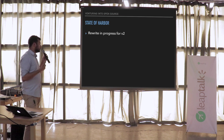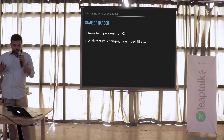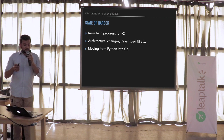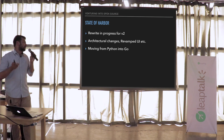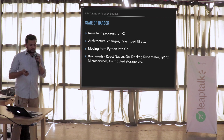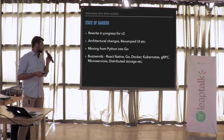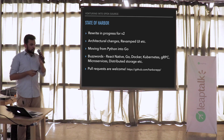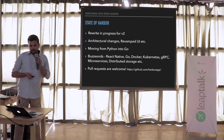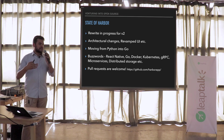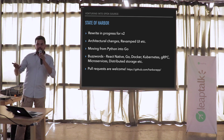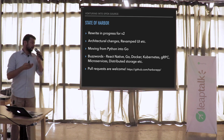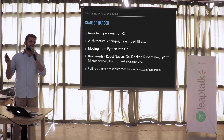Currently we're working on version 2. We have architectural changes, a revamped UI, and we're switching programming languages from Python to Go — and Python is a nightmare to deal with. It has several buzzwords you might know: React Native, Go, Docker, Kubernetes, et cetera. Active development is underway and pull requests are always welcome. This is really the problem I saw in my project — maybe you can see something similar in yours, extrapolate a solution that works for more than just your project, and make it open source. That's the magic question.